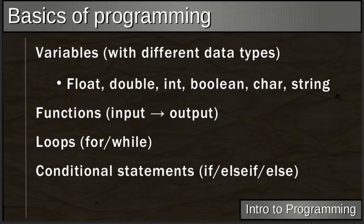Basic programming concepts start with variables — what you store information in. Variables hold values: a number, a sentence, a single character, or a true/false value. We work with variables using different data types. Just like in math we have integers, whole numbers, and other sets of numbers, in programming we have a range of data types.